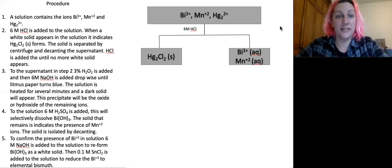So the next step in my procedure, step three, it says to that supernatant, so the liquid that was isolated in step two, we're going to add three percent hydrogen peroxide and then six molar sodium hydroxide dropwise till it's basic, turns the litmus paper blue, and then heat that solution for several minutes, and we'll see a dark solid. Now we're told this solid is the oxide and or hydroxide of the remaining ions. So in this step, we're actually not separating anything.